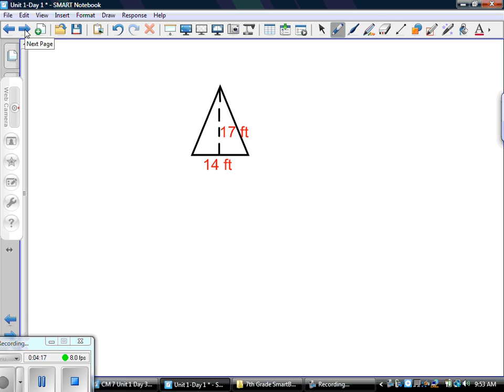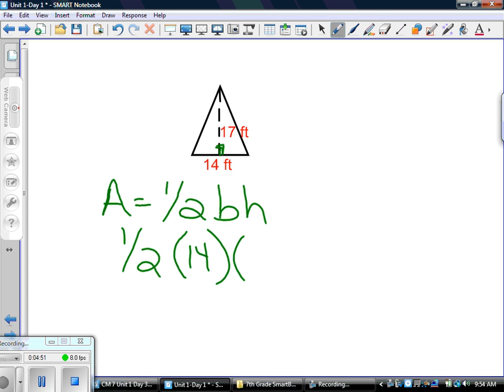Moving on now to the triangle. The triangle's formula is one-half base times height. Something to remember about the triangle's base and height is that they always create a 90-degree angle. In this figure here, we're going to see that this dashed line and the bottom, which is the base in this case, will form that 90-degree angle. So when we plug this in, we have one-half times 14 times 17.